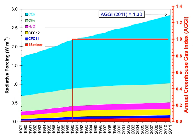Between 1970 and 2004, global growth in annual CO2 emissions was driven by North America, Asia, and the Middle East. The sharp acceleration in CO2 emissions since 2000 to more than a 3% increase per year — from 1.1% per year during the 1990s — is attributable to the lapse of formerly declining trends in carbon intensity of both developing and developed nations. China was responsible for most of global growth in emissions during this period.